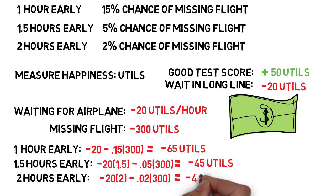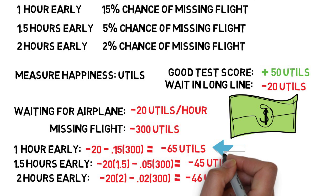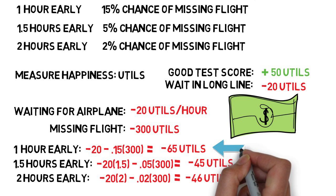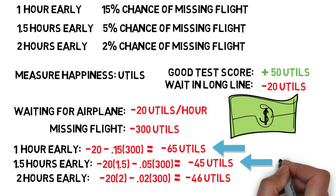So look at that. Arriving one hour early is the worst. But arriving 1.5 hours early is actually the best — if you keep doing this, you'd expect the maximum happiness even if it involves missing one flight out of 20. Coming two hours early is too early in terms of optimizing happiness.